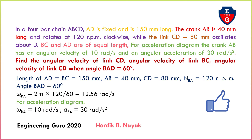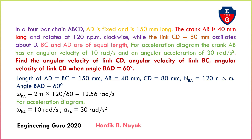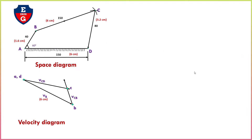The angular velocity of B with respect to A equals 2π N divided by 60. With N equal to 120 rpm, we find omega BA equal to 12.56 rad per second. For accelerations, omega BA equals 10 rad per second and alpha BA equals 30 rad per second square.